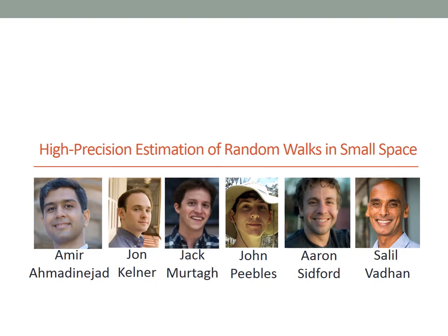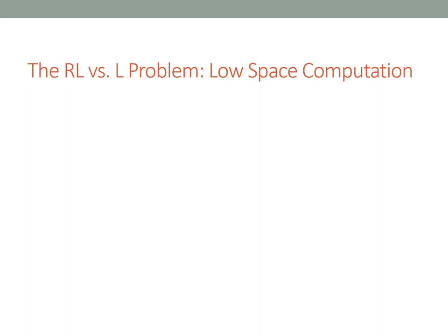I'm going to start by talking about the RL versus L problem, which is a problem about what can be computed in a small amount of space. When talking about low space computation, we have to be a little bit careful in specifying the model, because if we count the size of the input to the algorithm towards its space usage or the size of its output, then often the space usage of the algorithm will just be the max of those two things.